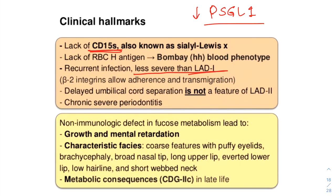In addition to the immunodeficiency, LAD2 patients show strong developmental abnormalities. The most severe developmental defects include those of psychomotor and mental capabilities. The abilities for directional movement — to sit, to walk — are strongly delayed. Speech development is also delayed. These defects indicate a strong influence of fucosylation on brain development, and the mental and psychomotor abilities are typically affected.